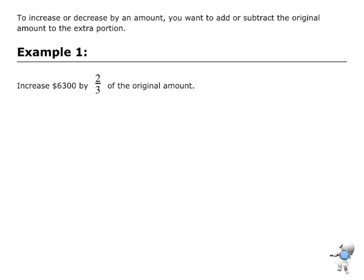Let's have a look at this. It says increase $6,300 by 2/3 of the original amount. First, I need to find out how much the increase will be. The increase will be 2/3 of the original amount, which is $6,300. I'm going to put that into my calculator, and that will give me an answer of $4,200.